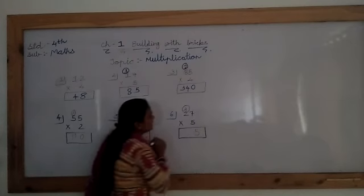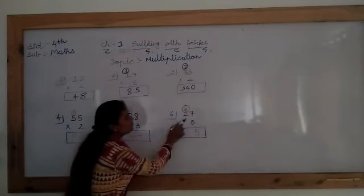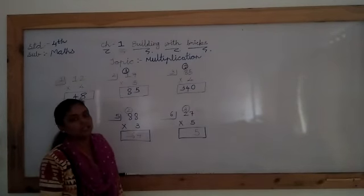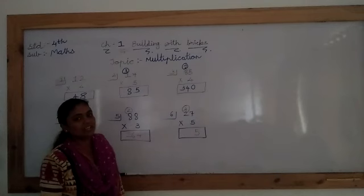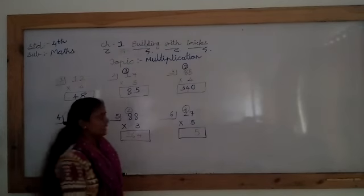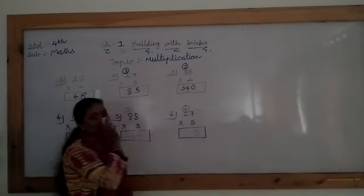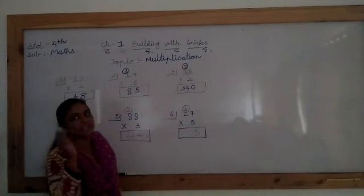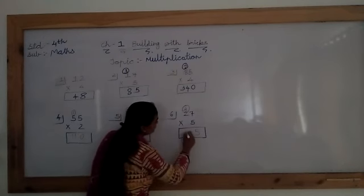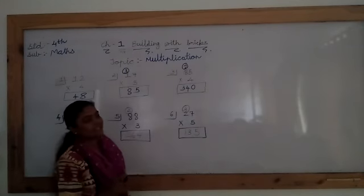See, we have to carry here. Now, 2 fives up. So, can we student 2 fives up? Yes, 10. In 10, we have to add 3. 10 and 3, 13. So, here the answer is 135.